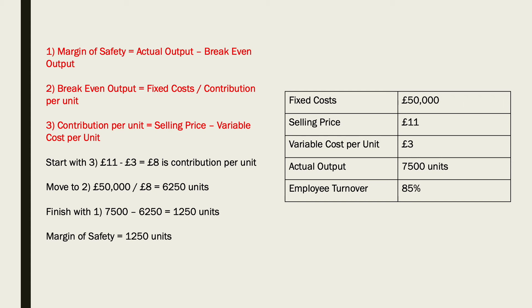Start with formula three: £11 take away £3 — that's your selling price take away your variable cost per unit. That comes to £8, and that's your contribution per unit.